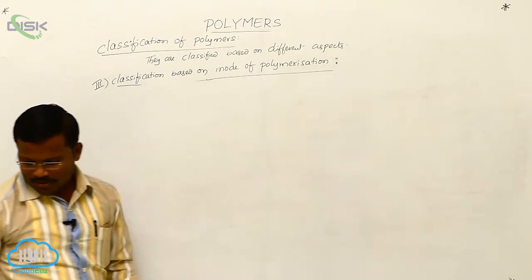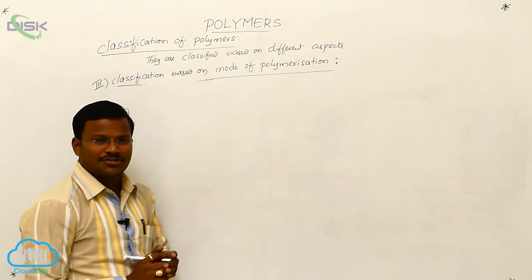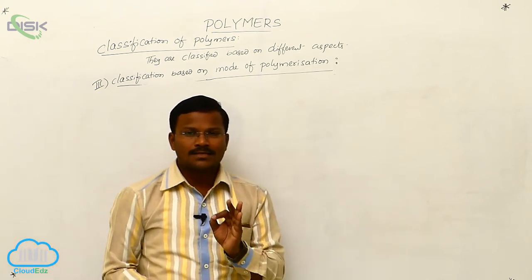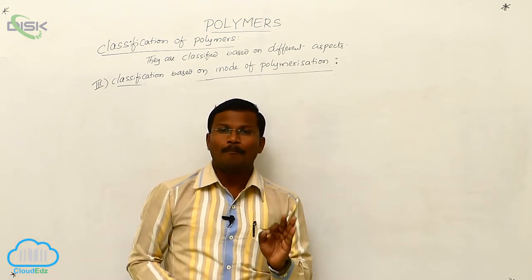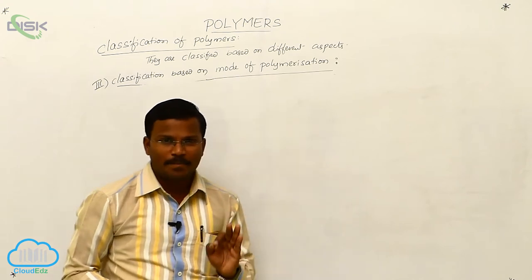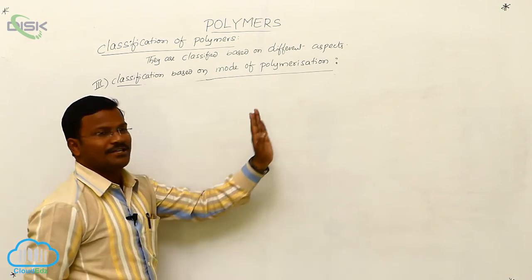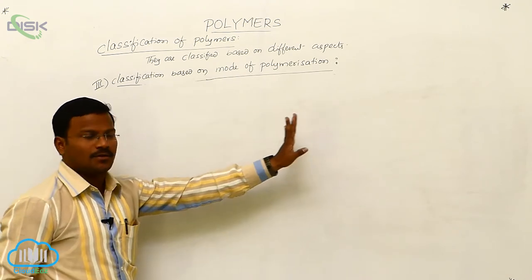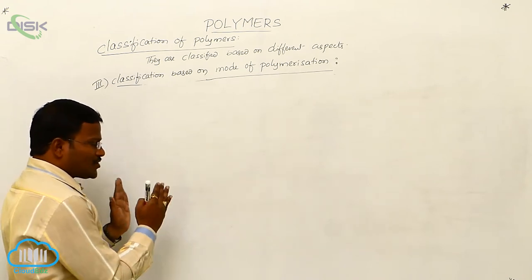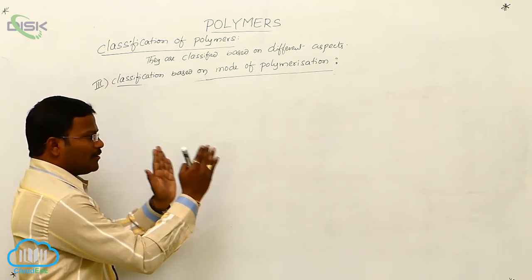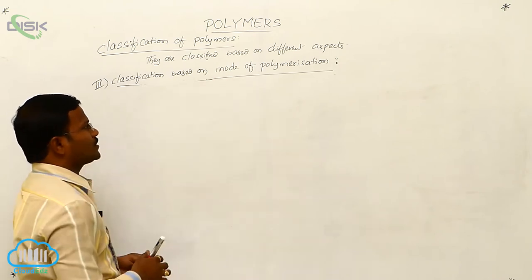What is a polymerization reaction? The process of formation of polymers from their respective monomers is called a polymerization reaction. In other words, the preparation of polymers is called polymerization reaction.